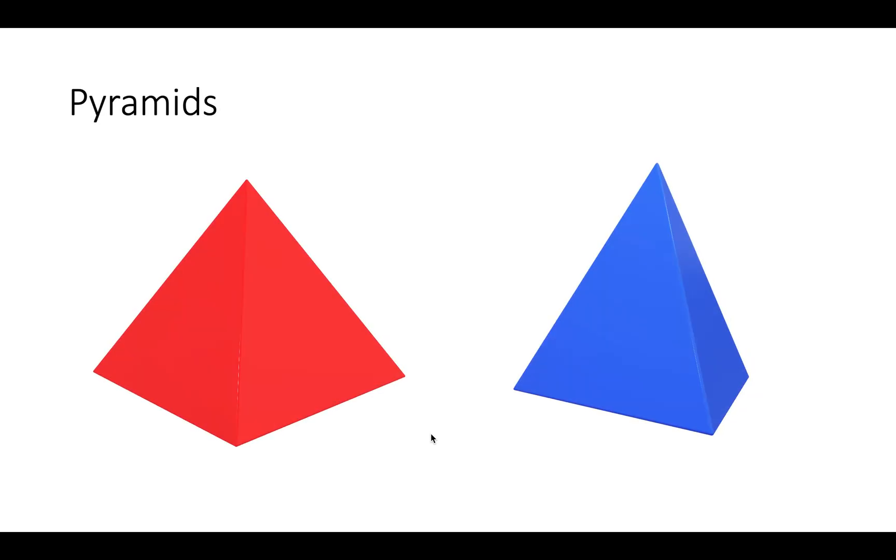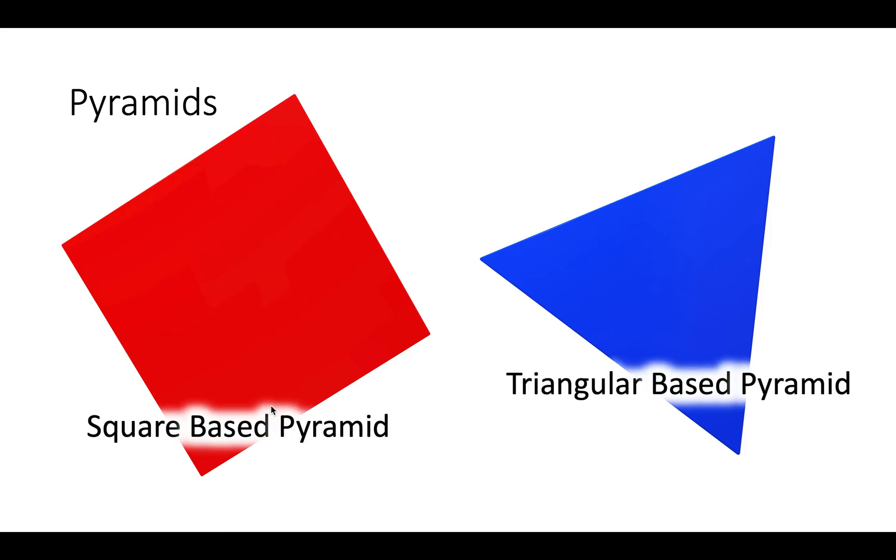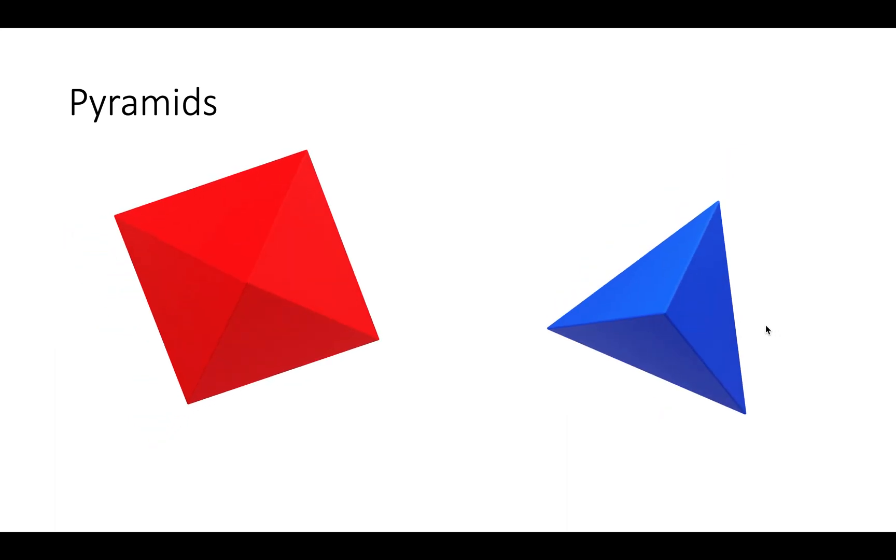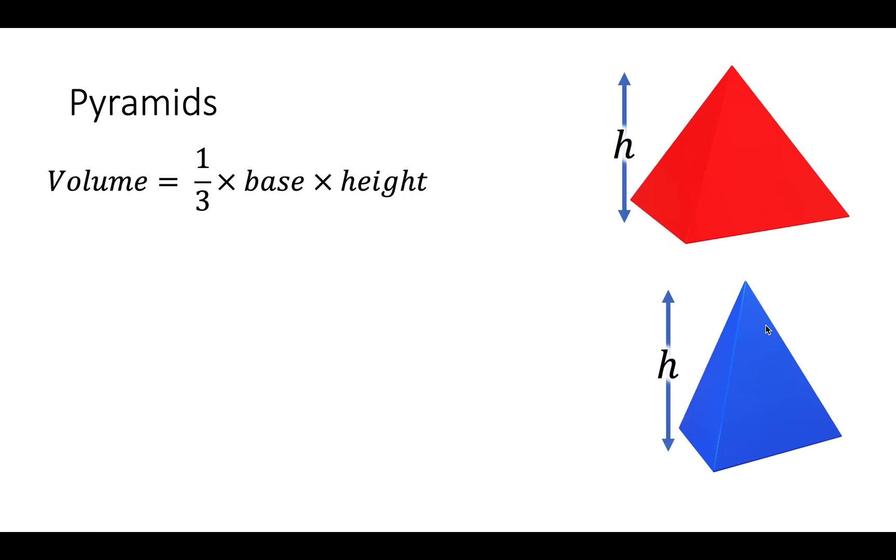Now we're looking at pyramids. Here are some pyramids. And on the base of these pyramids, this pyramid has a square, so we call it a square-based pyramid. This pyramid over here is called triangular-based pyramid because it's got a triangle on the bottom of the pyramid. And you can see that from the top as well. The equation is volume equals a third times the base times the height. The base is the area of the entire base, no matter what shape it is.